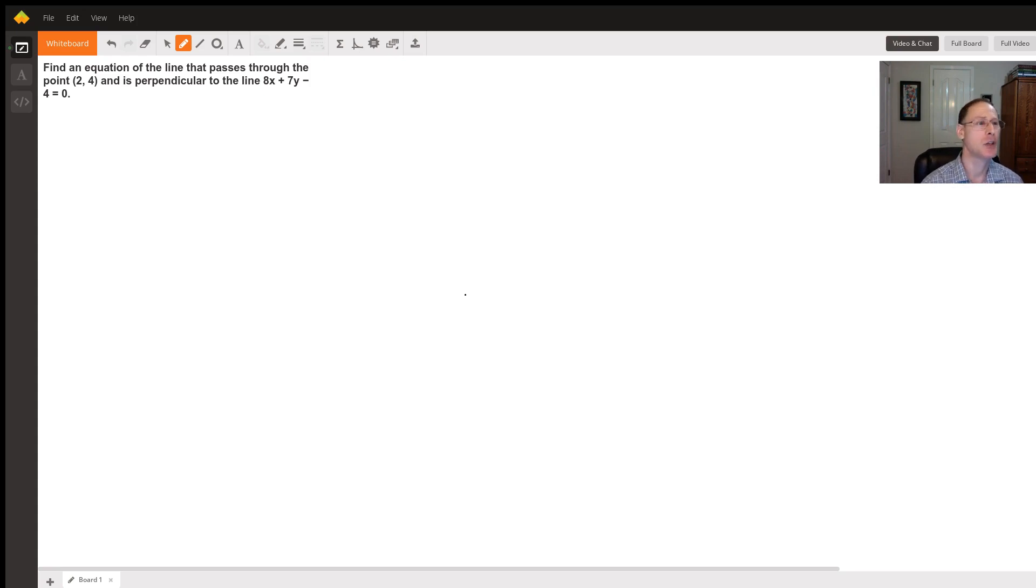The question is to find an equation of the line that passes through the point (2,4) and is perpendicular to the line 8x plus 7y minus 4 equals 0.